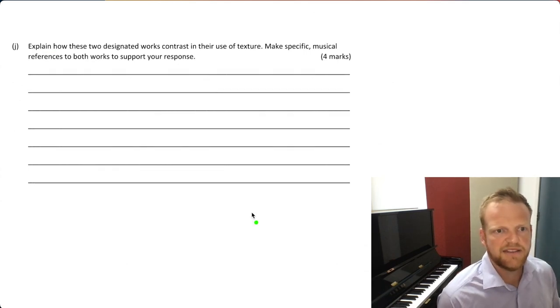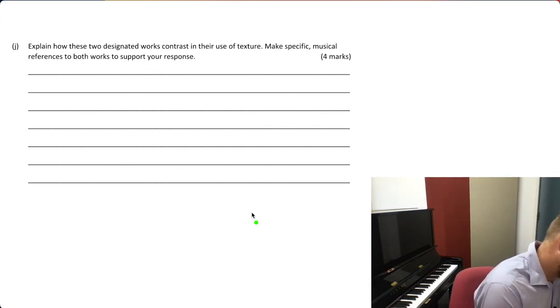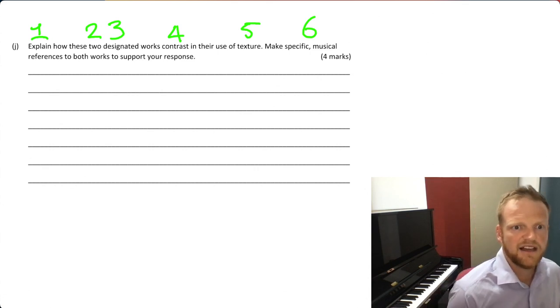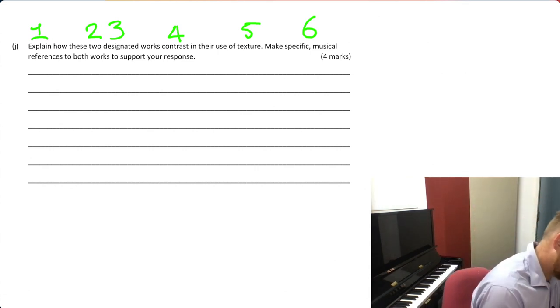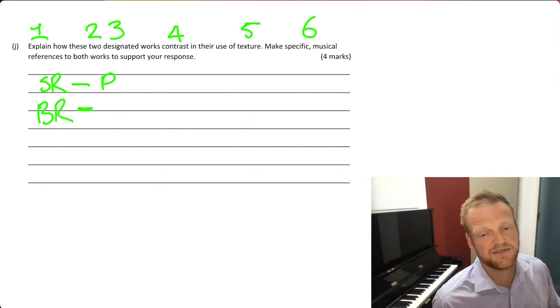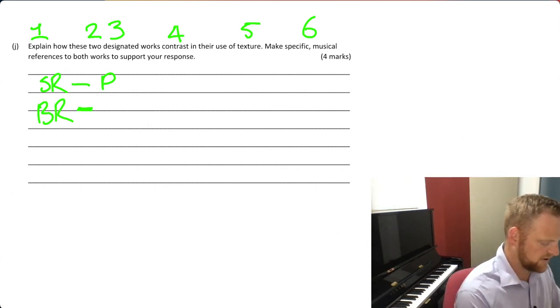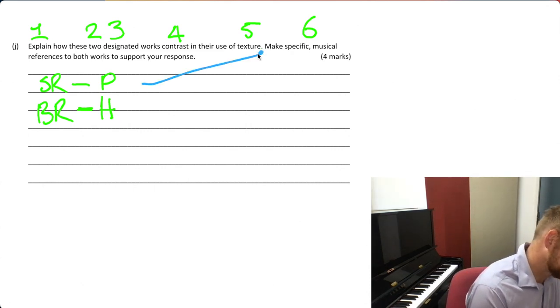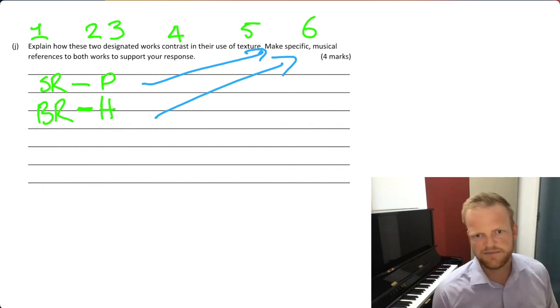Oh, last one, I think, is explain how these two—okay, so we're going to mark this up again. So explain, that's one thing I have to do. Two designated, one, so two, you've got to put two different pieces. Four, I've got to contrast this time. Five, texture. Six, make specific examples. So that's a lot of things to do for four marks. So the texture, I'm probably just going to define, so I'd say Short Ride texture, polyphonic. Bohemian Rhapsody texture is polyphonic sometimes, but since I've got to contrast it, it's sometimes also homophonic, a melody with accompaniment. So I'm just going to put homophonic, and then I'm going to give my two examples up here. Give some specific bar examples.